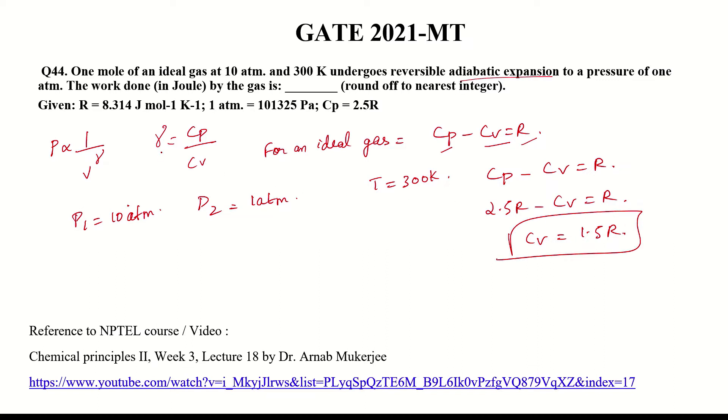From this, we can find γ. γ = Cp/Cv = 2.5R/1.5R = 1.67 or 5/3.